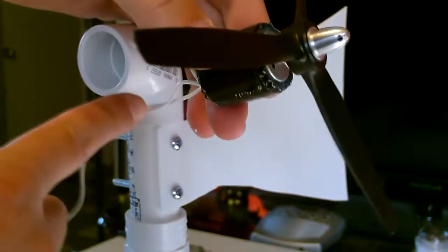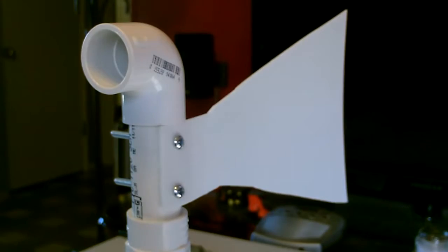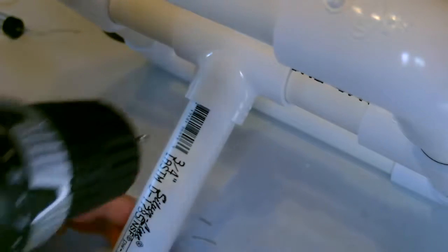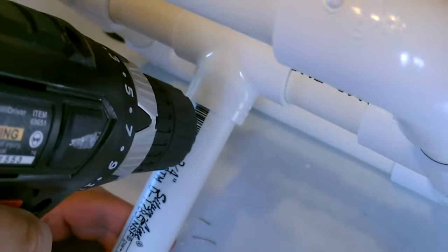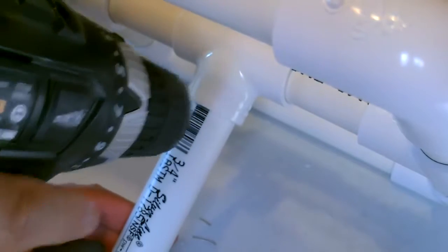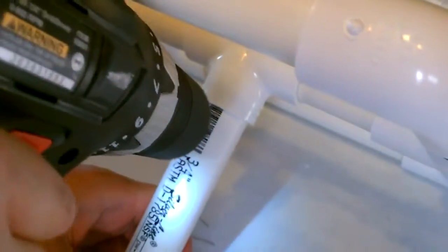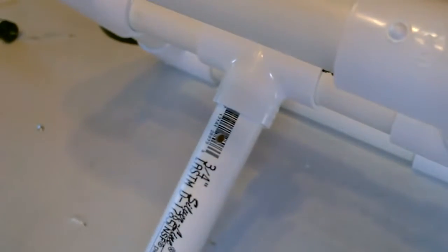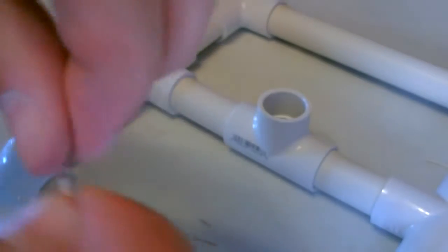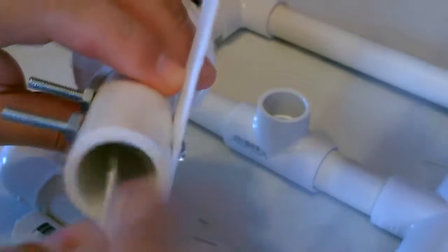All right now, I'm just going to feed the wires down the tube. Drill a hole here so the wires will have somewhere to come out of. That should do. All right, then twist the wires together and feed it down the tube.